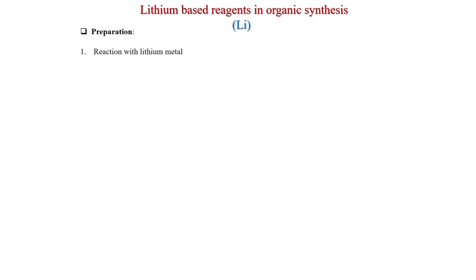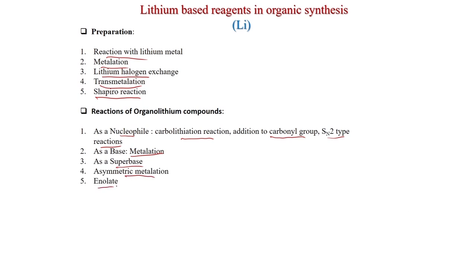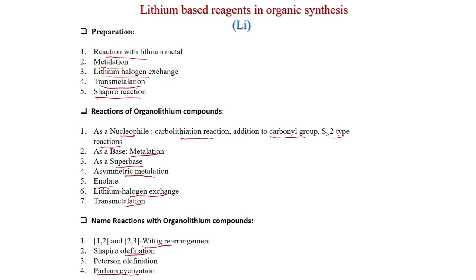Today in class we will first discuss preparation, which includes reactions with lithium metal, then metallation, lithium-halogen exchange, transmetallation, and the Shapiro reaction. We will also cover reactions of organolithium compounds as a nucleophile: carbolithiation, addition to carbonyl and acyl groups. As a base: metallation reactions. As a super base, asymmetric metallation with chiral ligands and enolate chemistry. Name reactions include the 1,2- and 2,3-Wittig rearrangement, Shapiro olefination, Peterson olefination, and Parham cyclization.